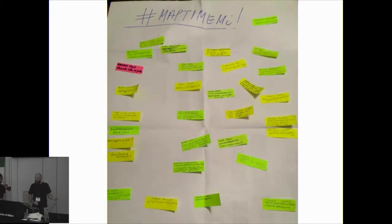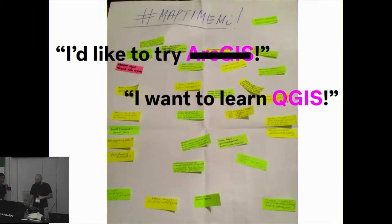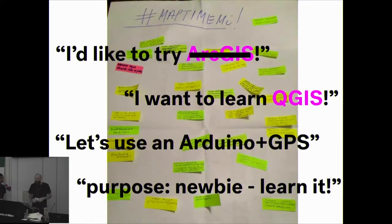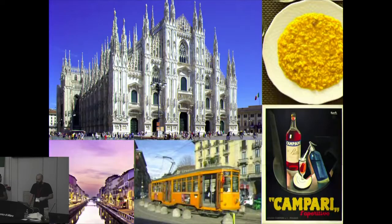After that first time we collected ideas from the community — we let them write post-its with their interests. As you might imagine, we got all kinds of answers: people wanted to learn a proprietary GIS software, others wanted the open source equivalent, some wanted to learn something very specific, and at the same time others wanted to learn everything. This is really challenging from an organizer perspective — you're confronted with such a wide spectrum of expectations. A way to go around this is to really listen to your community and try to understand who's in front of you.